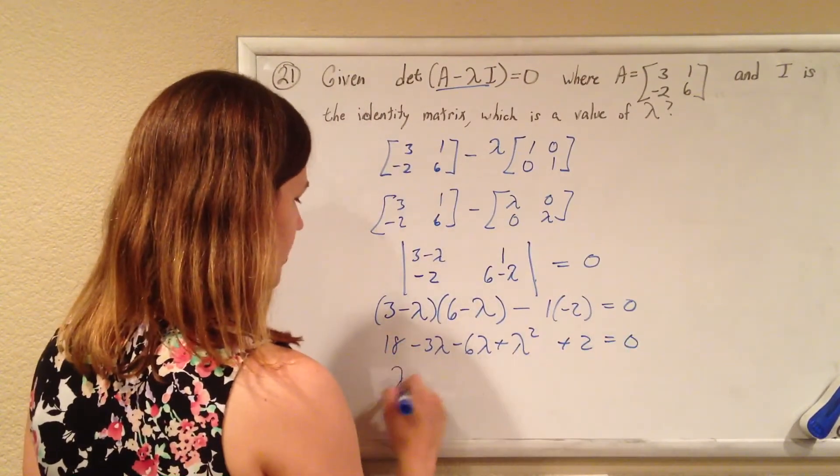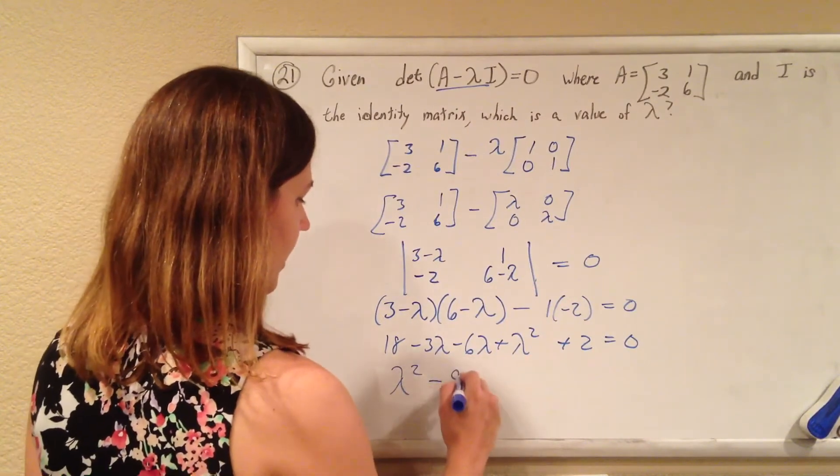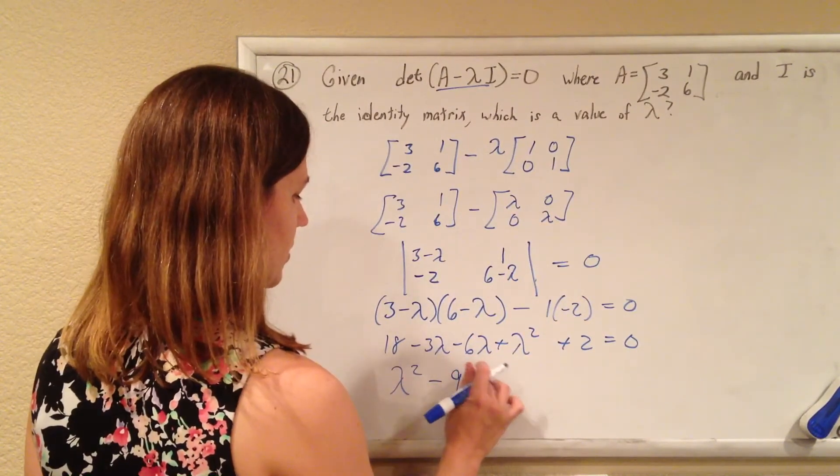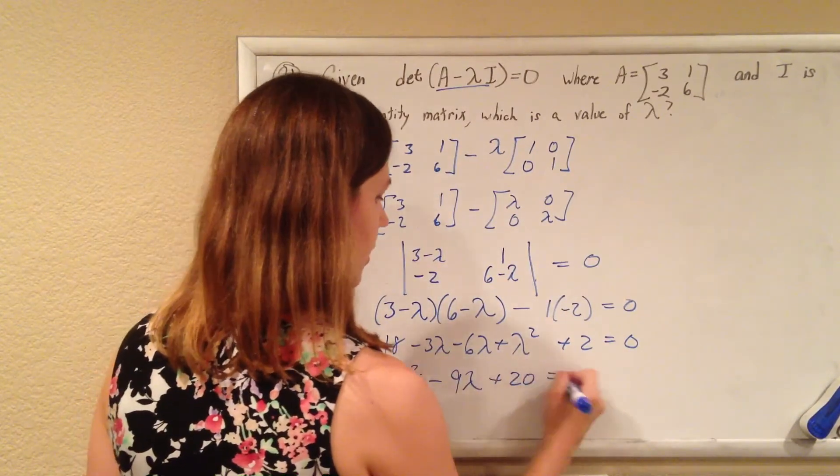So, lambda squared, minus 9 lambda, 18 plus 2 is 20, equals 0.